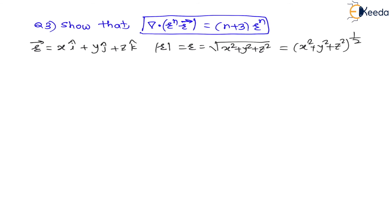But we have to find r^n. Therefore r^n equals (x² + y² + z²)^(1/2) raised to the power n. Powers get multiplied, therefore r^n = (x² + y² + z²)^(n/2).